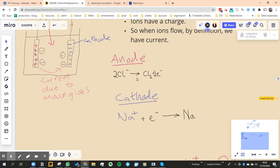At the anode, you've got two Cl minus, so it goes to Cl2 plus two electrons, so it gives the electrons to the anode.